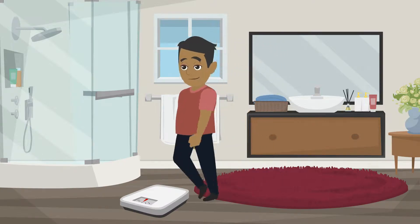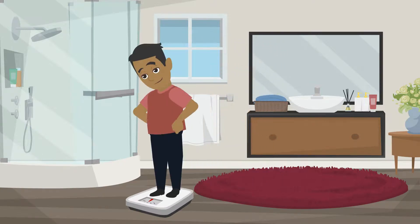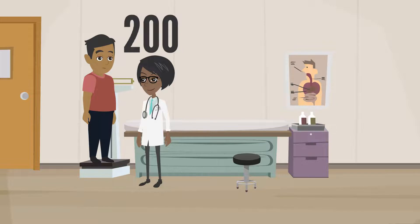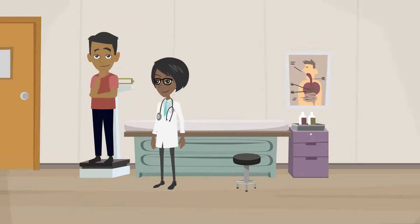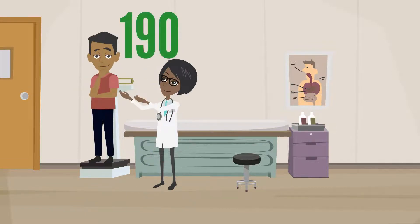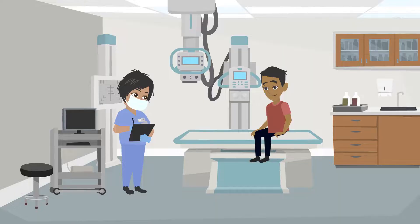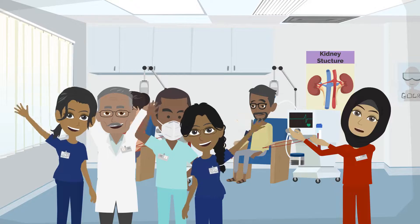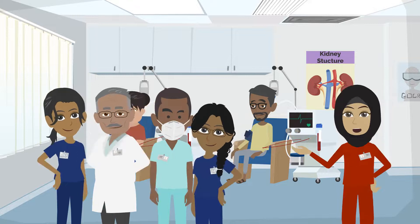With extra waste and water in your body, you may experience some weight gain. Your normal body weight without extra fluid is called your dry weight. There is no perfect machine to determine your dry weight, so your medical team will calculate how much water to remove based on five parameters.